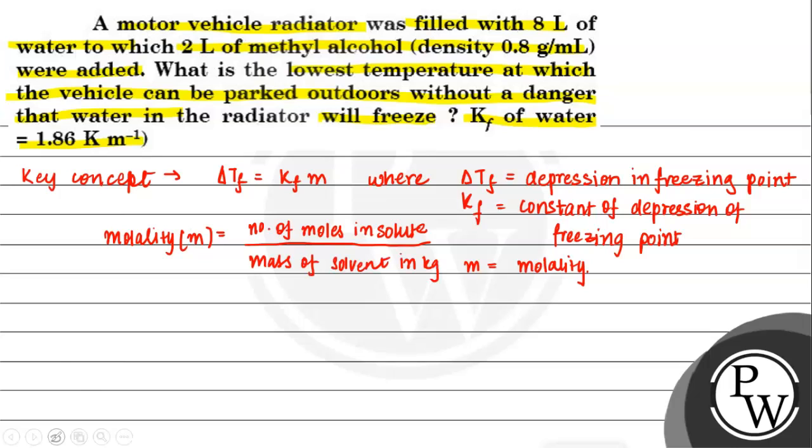Now moving on to the question, we can see mass of 8 liters of water equals 8 kg.